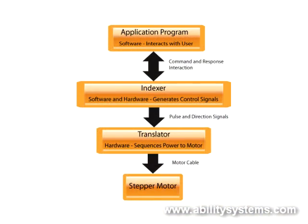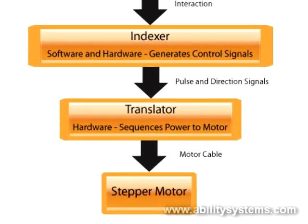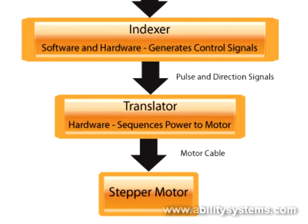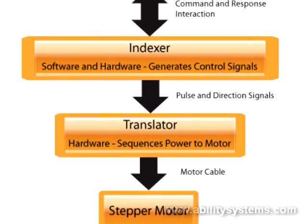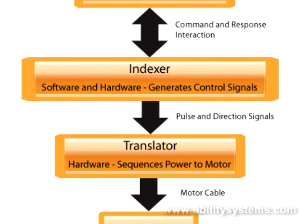That completes our introduction to translators. To recap, the translator responds to an electronic pulse by moving the stepper motor shaft by a tiny amount. The amount of motor shaft movement per pulse depends on the motor and translator that is used. The motor and translator used in this demo responds to each pulse by moving the motor shaft 0.9 degrees, requiring 400 pulses for a complete revolution. The status of a second input, called the direction input, determines whether each pulse moves the motor shaft clockwise or counterclockwise. In the following session, we will discuss the indexer portion of the system, how it controls speeds, acceleration, and the coordination of motors to perform complex tasks.